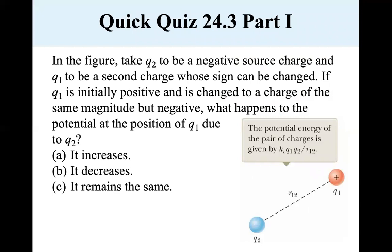In the figure, take q₂ to be a negative source charge and q₁ to be a second charge whose sign can be changed. If q₁ is initially positive and is changed to a charge of the same magnitude but negative, what happens to the potential at the position of q₁ due to q₂? It remains the same because the potential at position q₁ due to q₂ is only from the source. So whether it's positive or negative, the potential is the same from q₂. So it remains the same.